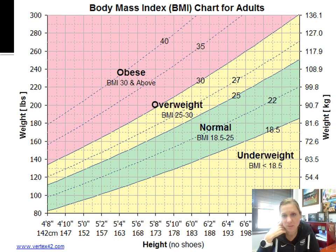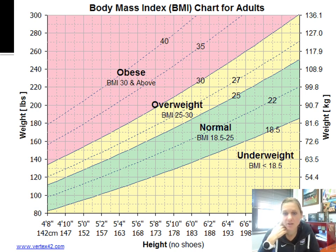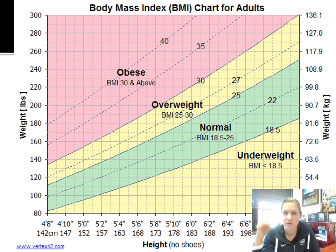Let's start with BMI. BMI is a very simple measurement — if you would even consider it a measurement. It is simply a ratio of height to weight. We're able to take somebody's height and weight and plug it into the equation: their weight divided by their height squared, and give them this number.